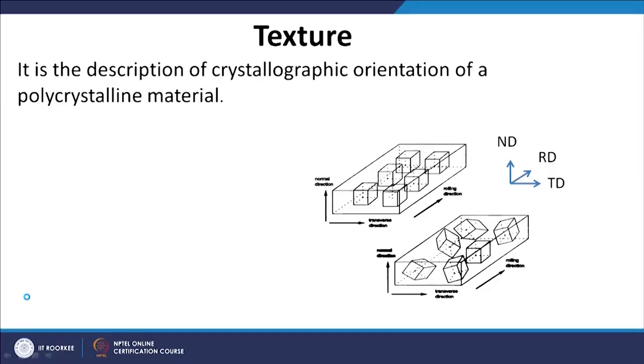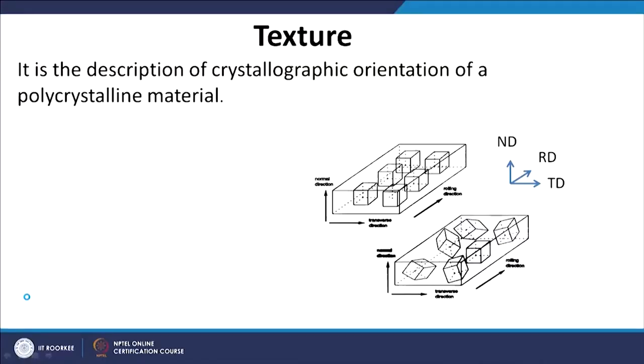The first basic of understanding starts from the stereographic projection, and that is what I am taking today as the first lecture in this module. Basically, texture — just a quick way to show you what we mean by texture — is that if you see an individual grain in a polycrystalline material, the identity of the grain is how the unit cell is oriented in that grain.